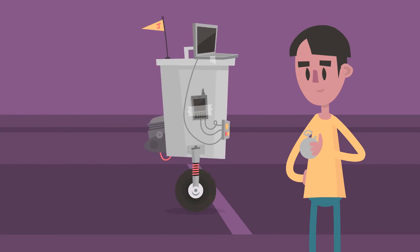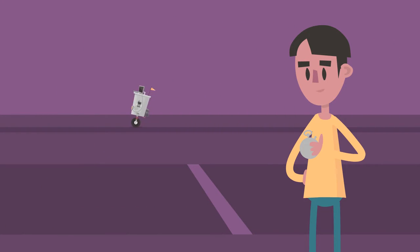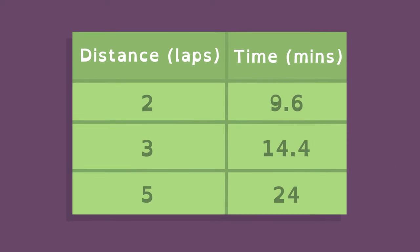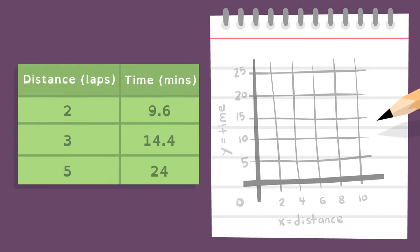Jason's robot is designed to travel at a constant speed, but does it really? Jason collects data and creates a graph, and then roughly estimates the position of the points.